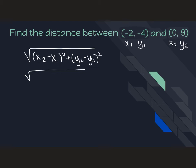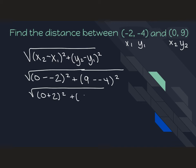X2 is 0 minus X1 is negative 2 squared plus Y2 is 9 minus negative 4 squared. Remember when we have minus and negative, it's really like addition. When I do that addition, I have 0 plus 2 is 2, and 9 plus 4 is 13.